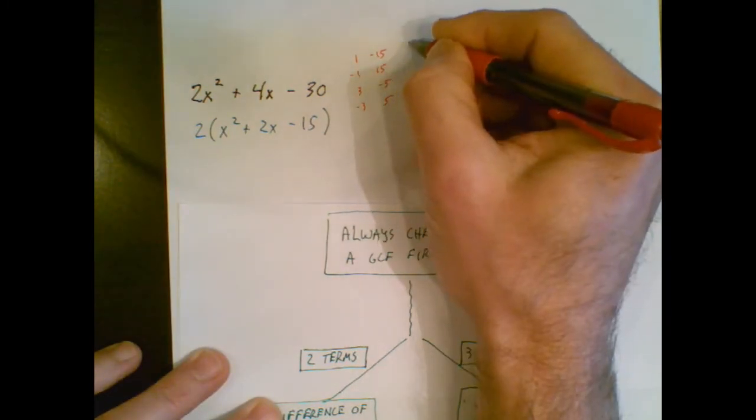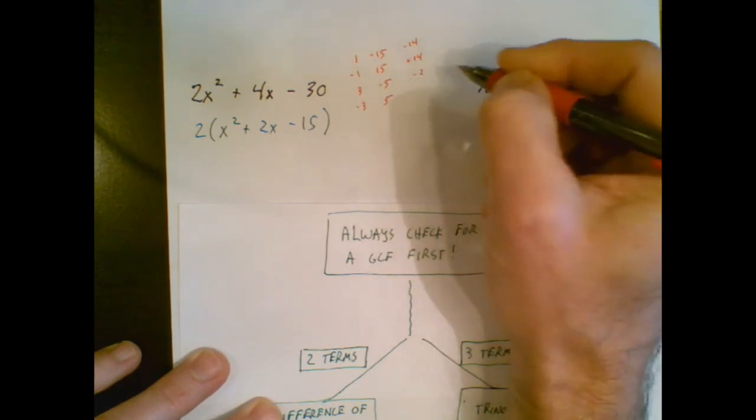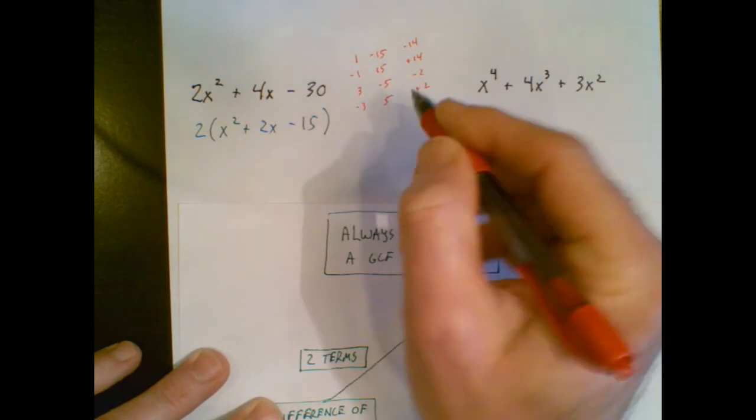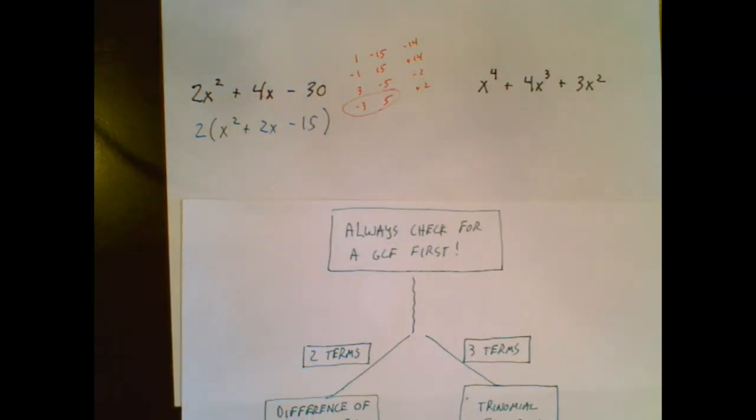One of these pair is the golden pair, because they add to positive 2. These two add to negative 14. These two add to positive 14. They add to negative 2. Ding, ding, ding, ding, ding. These two add to positive 2. So I've found the golden pair.